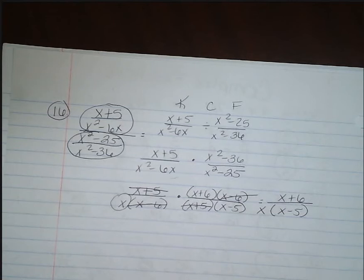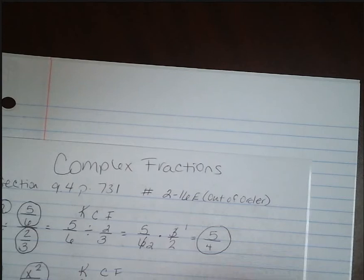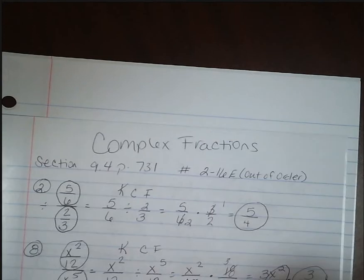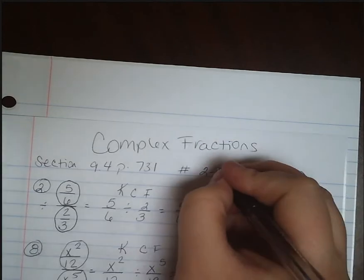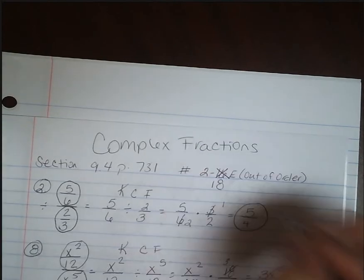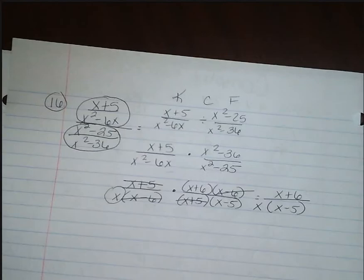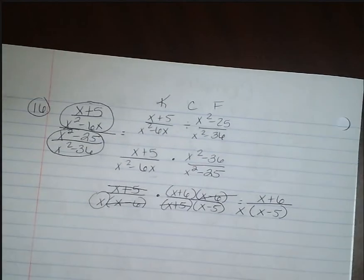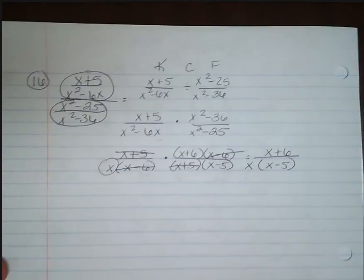Now we've got three problems that we skipped. I should also correct myself — at the beginning I said we'd go through 16, but I meant through 18. So there are three problems we've skipped, and we're going to go back and do those. We'll start off looking at problem number 4.